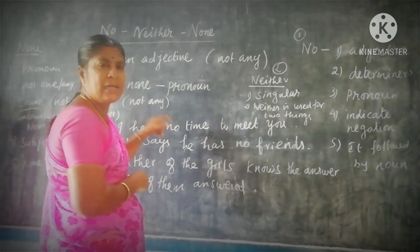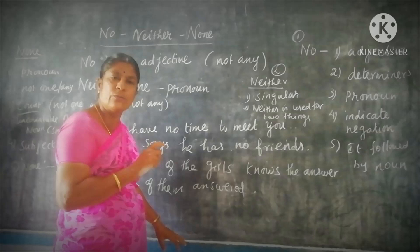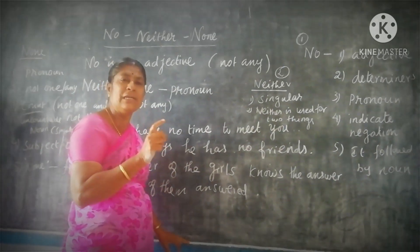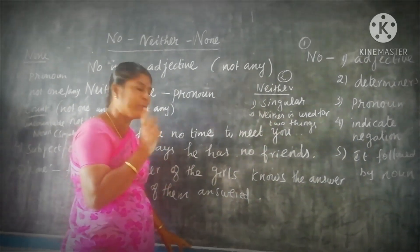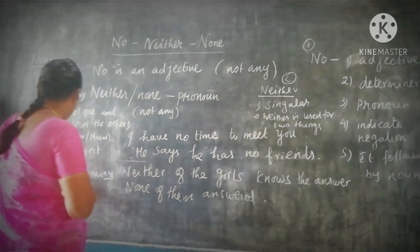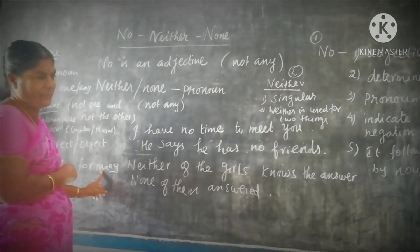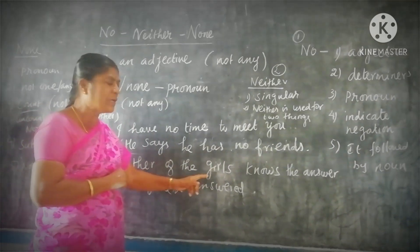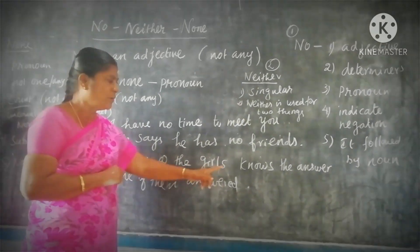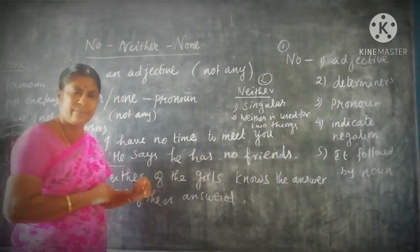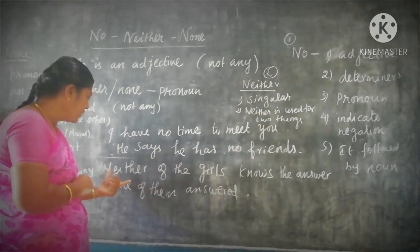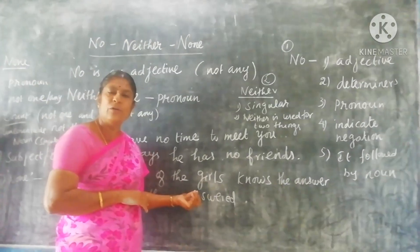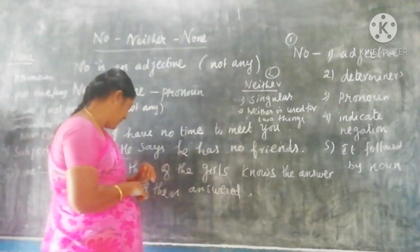But the word none is used for more than two things. So neither always refers to only two things, but none takes many. For example, neither of the girls knows the answer — that means nobody knows the answer.